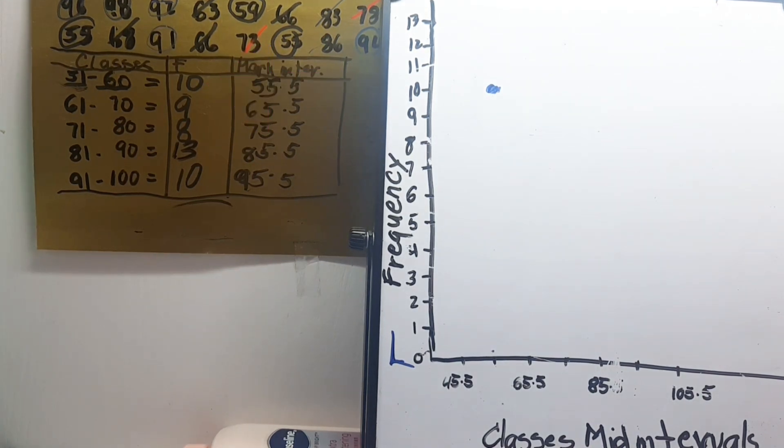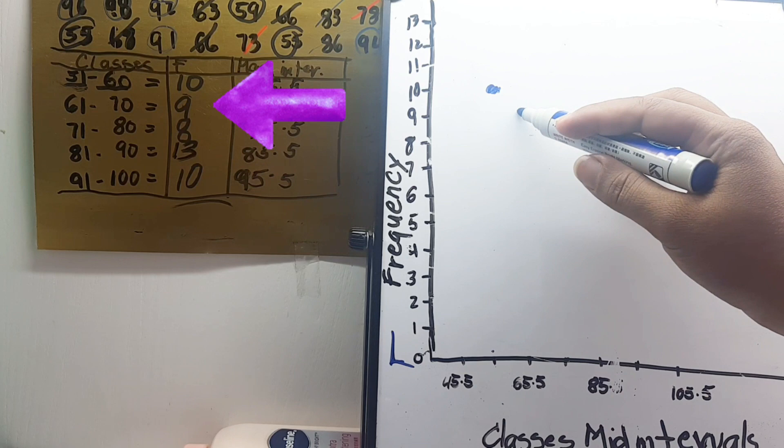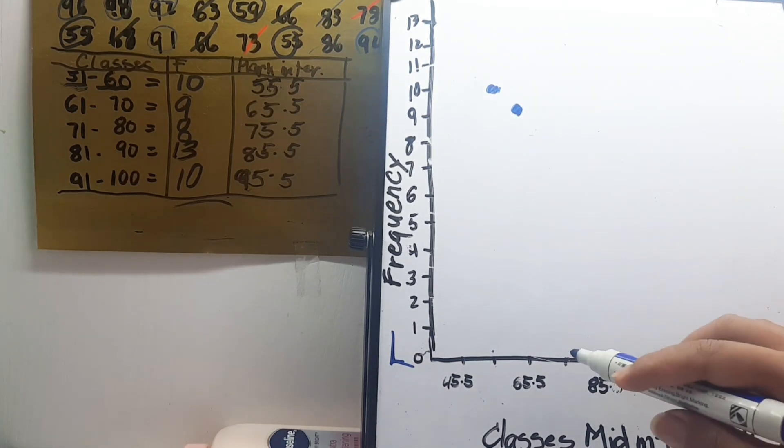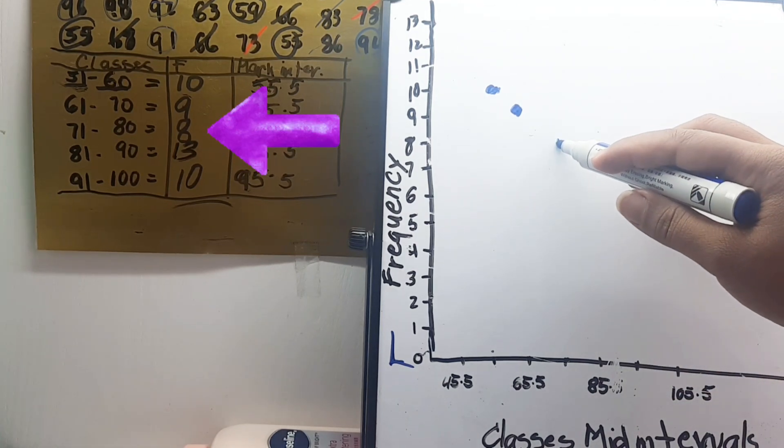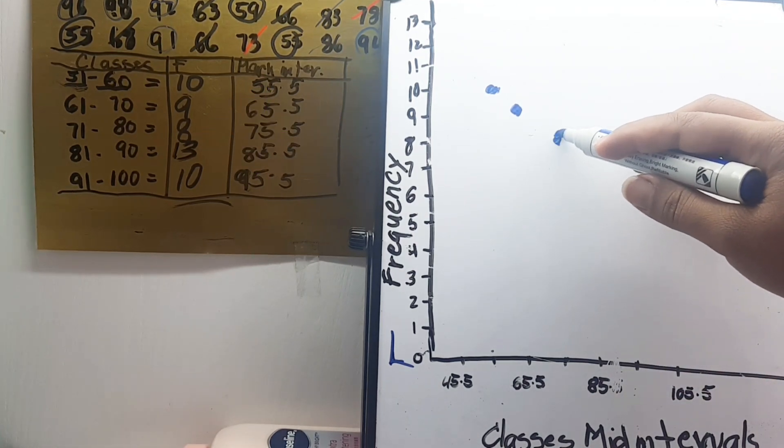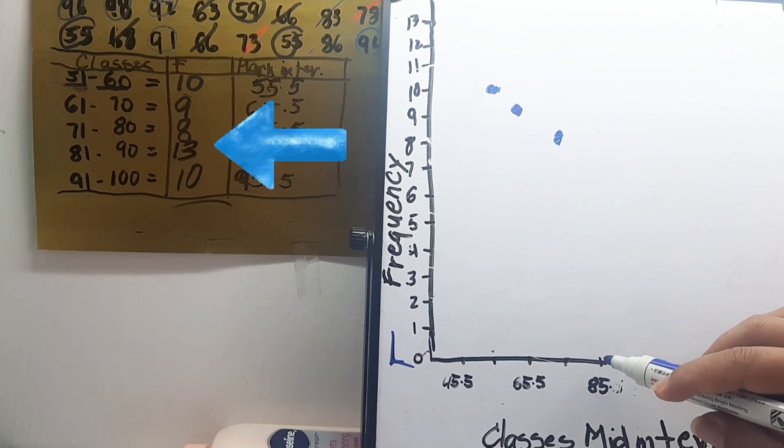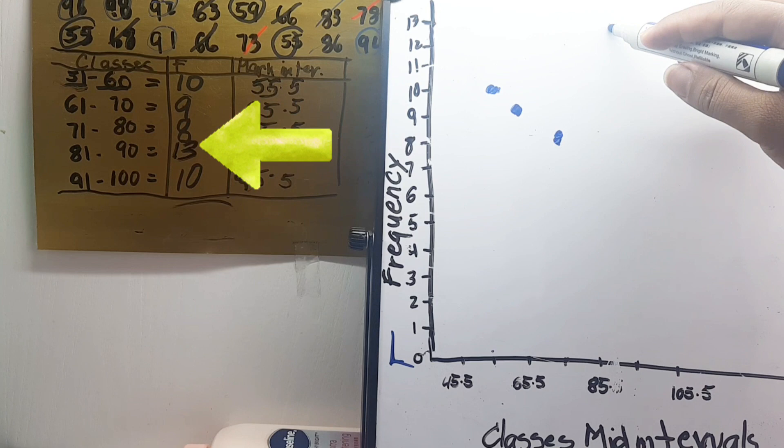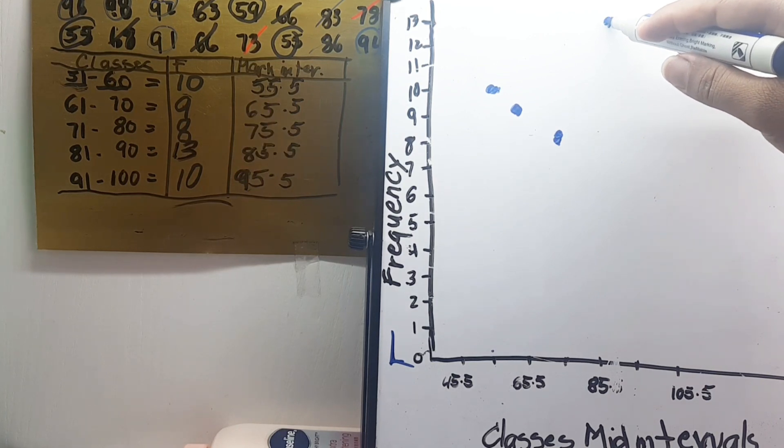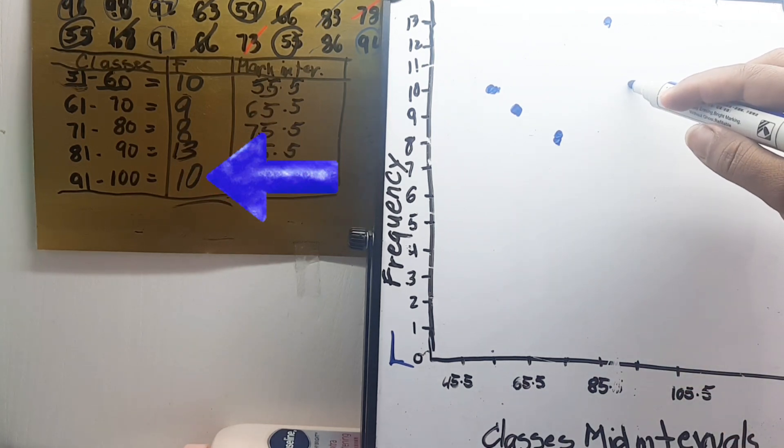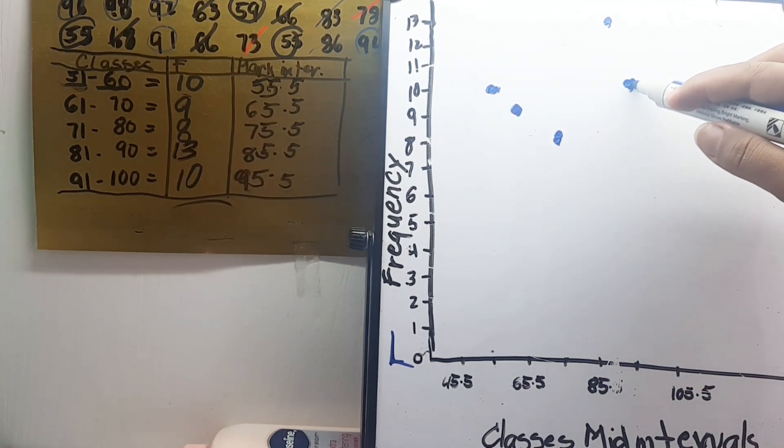So 65.5 is 9, here. 75.5 has 8. 85.5 has 13, should be here. And 95.5 has 10, like that.